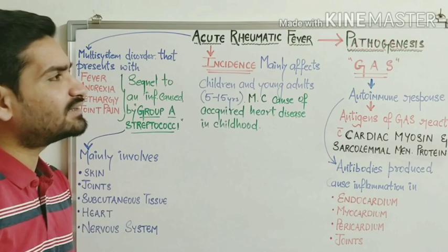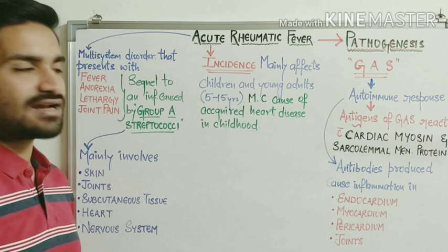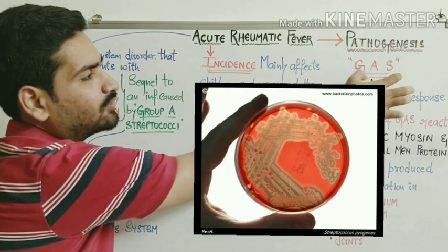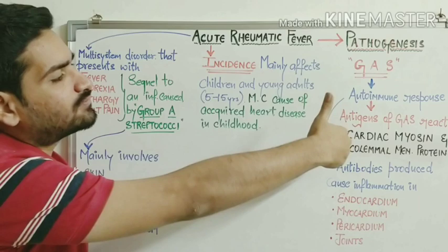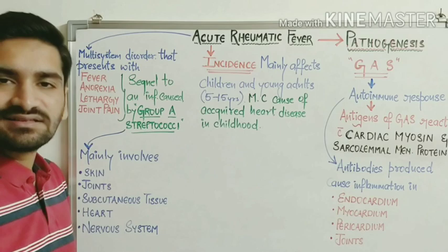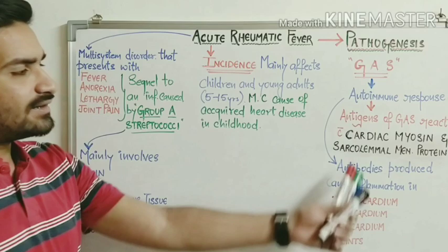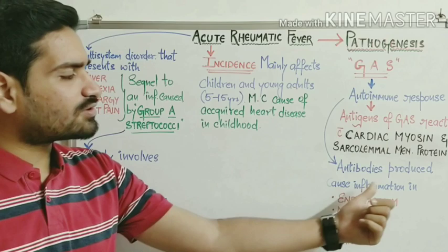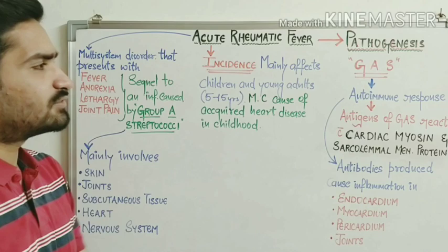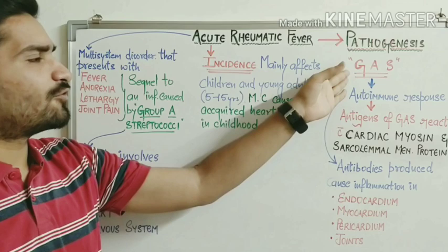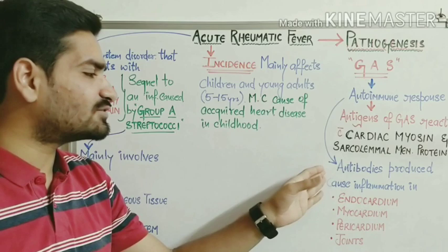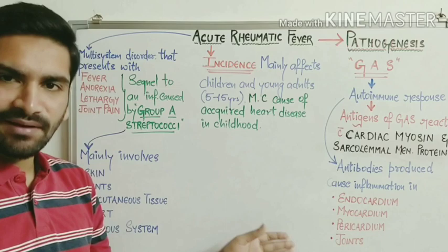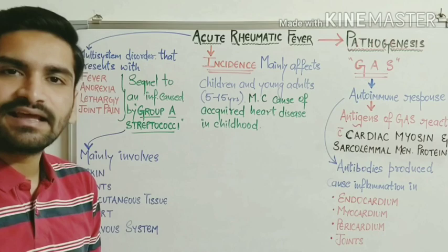The pathogenesis of acute rheumatic fever starts with an infection by Group A Streptococci. The antigens of Group A Streptococci react with cardiac myosin and sarcolemmal membrane proteins. This triggers an autoimmune response in the body, generating antibodies that cause inflammation in the endocardium, myocardium, pericardium, and joints.